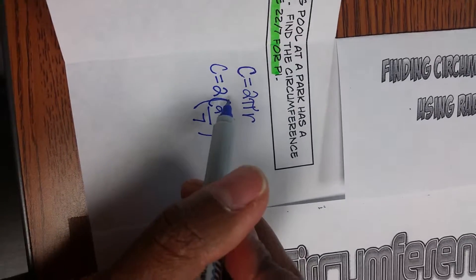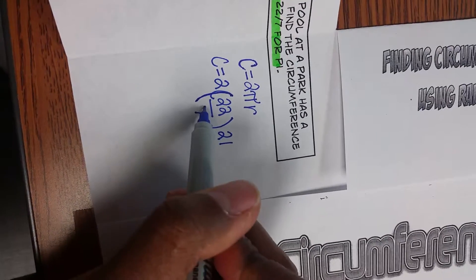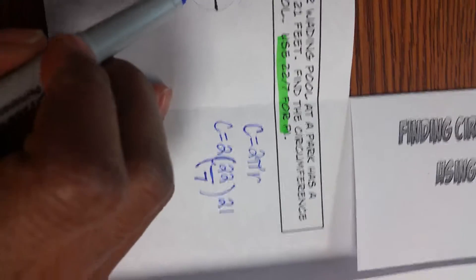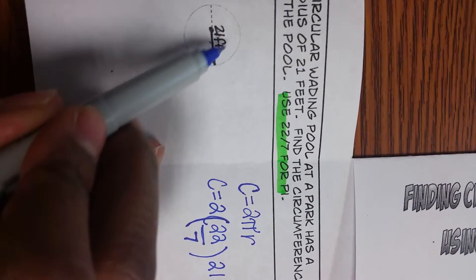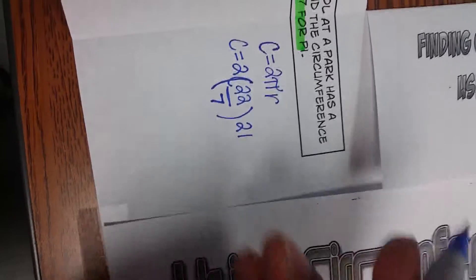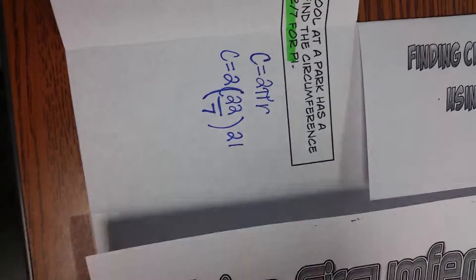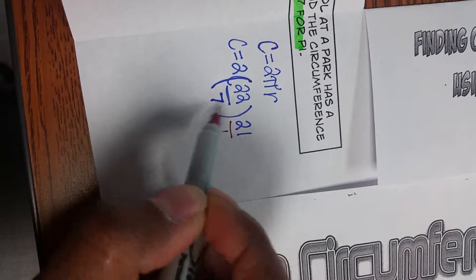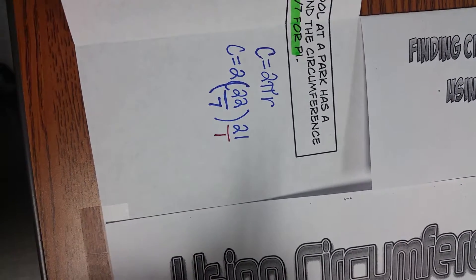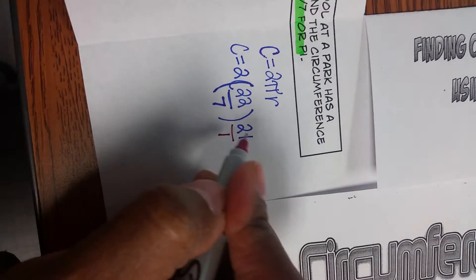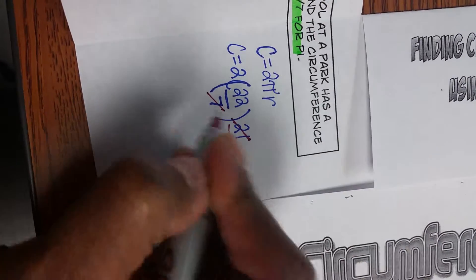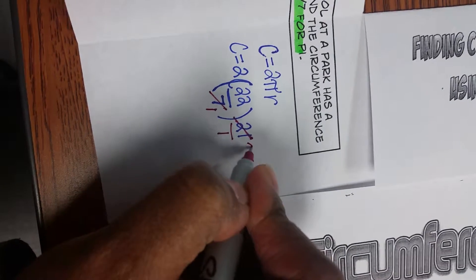Now we're going to use 22 over 7 simply because we have a multiple of 7. Anytime you have a multiple of 7, when you have the radius or the diameter, it's good to use 22 over 7 because here's what I can do. I can put this 21 over 1 and now I can simplify if I need to. So 7 will go into 21. So when I do both of these divided by 7, I get 1 here and this becomes a 3.